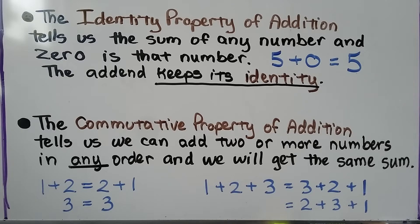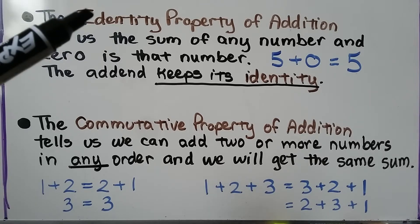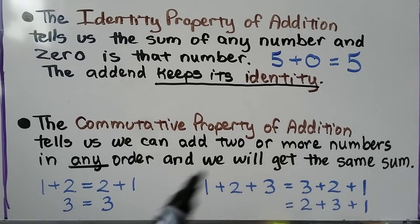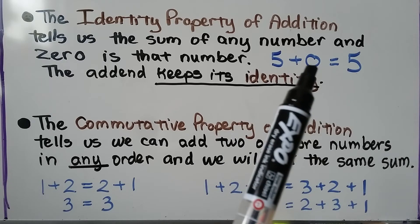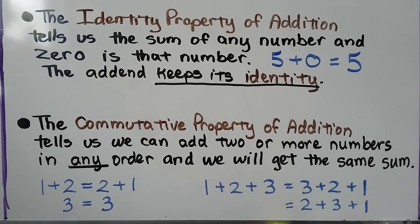The identity property of addition tells us the sum of any number and 0 is that number. 5 plus 0 is going to equal 5. The addend keeps its identity — that's why it's called the identity property. Its name doesn't change. When we add 0 to it, it stays a 5.